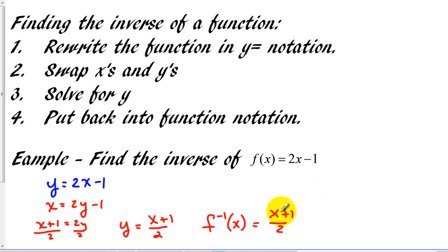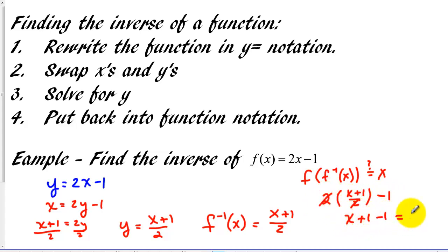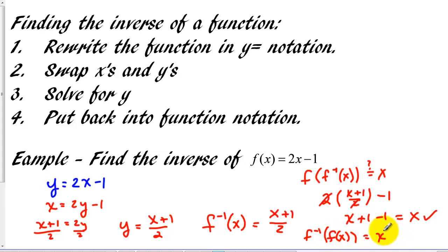To verify, we evaluate f of f-inverse of x: that's 2 times the quantity x plus 1 over 2, minus 1. The 2s cancel, giving x plus 1 minus 1, which is x. It checks out. Similarly, f-inverse of f of x would also come out to just x. Good luck working with function notation, composite functions, and inverse functions. See you around.